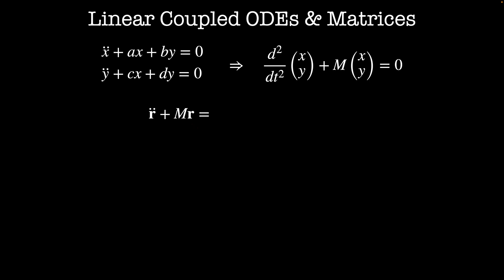Like we did before, let's combine the d squared by dt squared and m matrix together into a single differential operator that acts on r. So our differential operator then is d squared by dt squared plus m, which we're going to call d. Now let's learn to solve the equation dr equals zero.